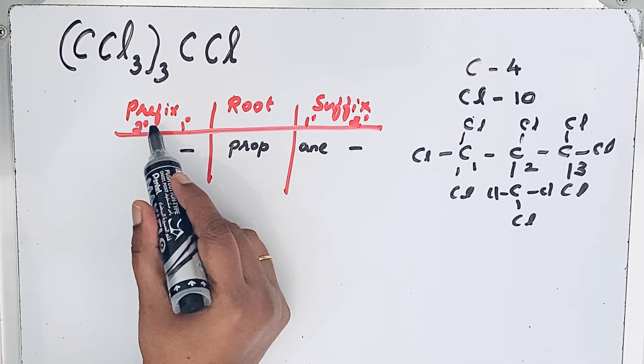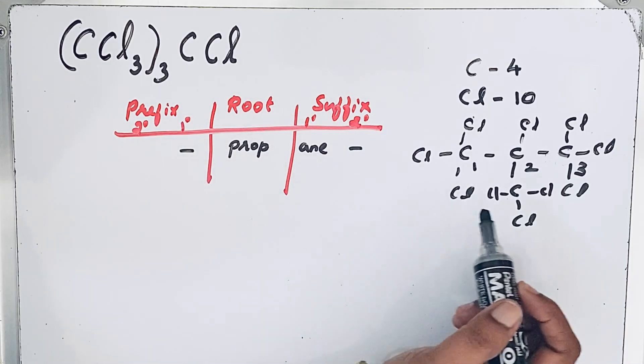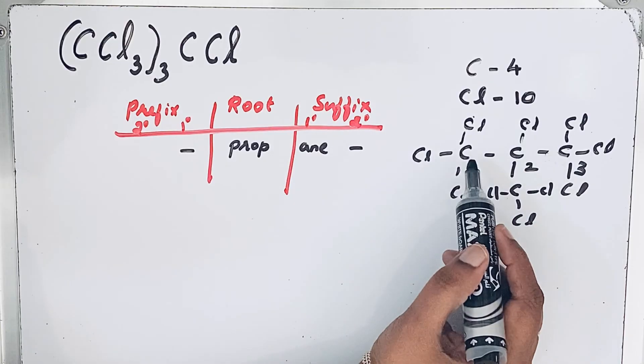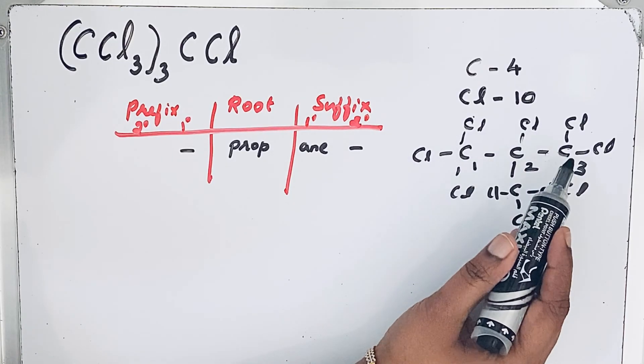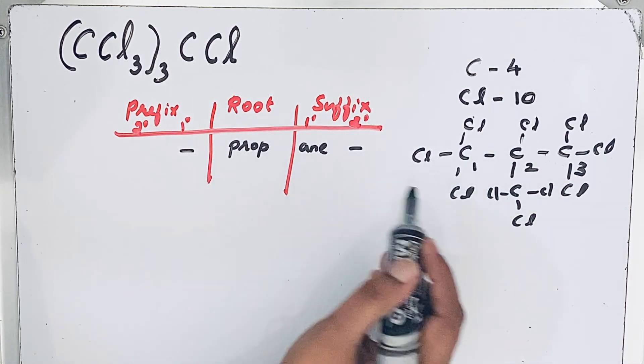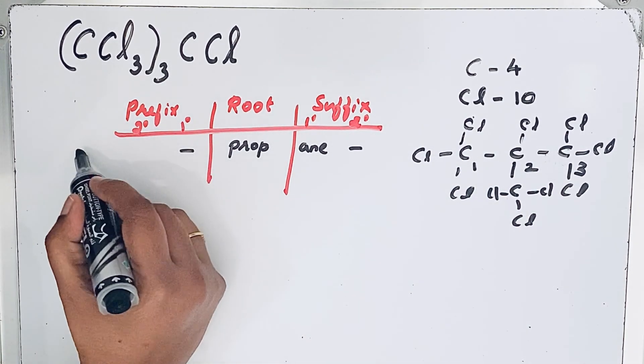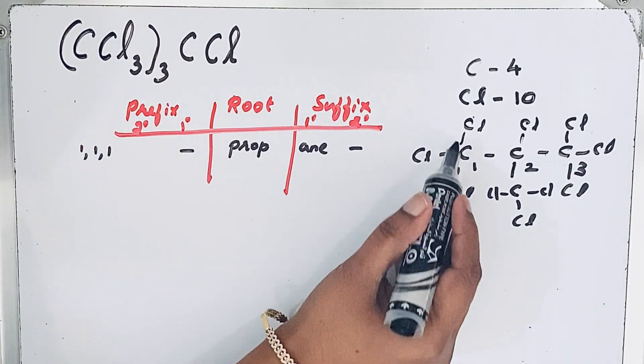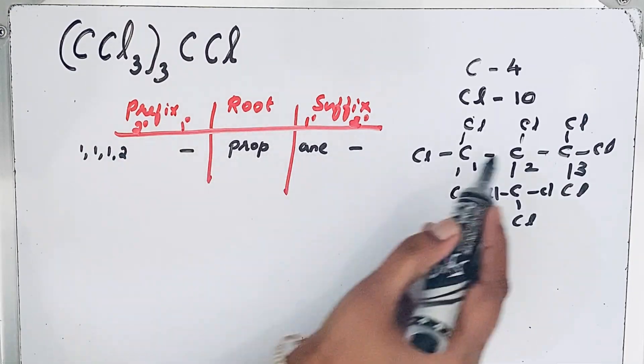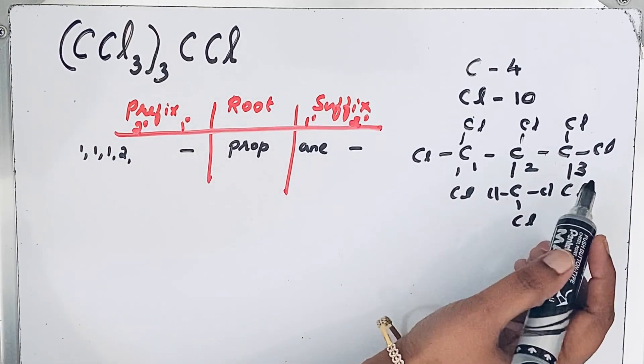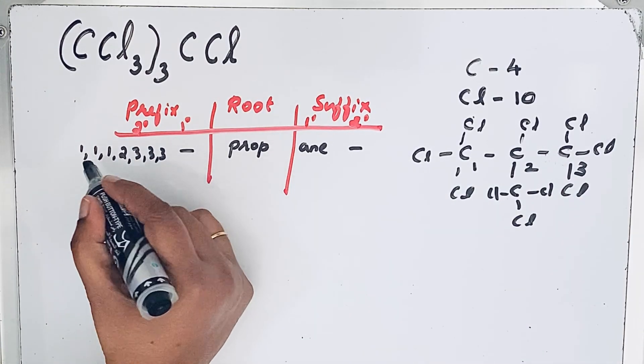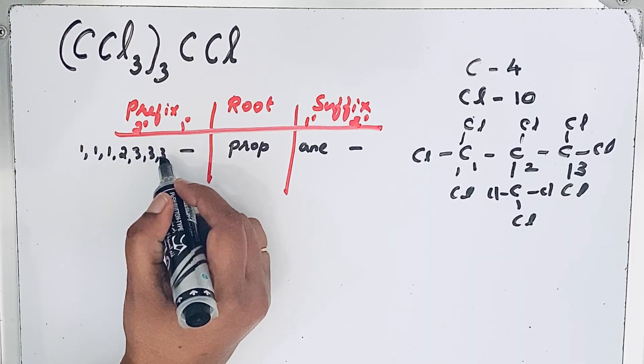For the secondary prefix, we have two possibilities: one is branched chain, then we have chlorine substituted in all the carbons. We can write how many chlorine substituted: 1, 1, 1, 1—three chlorine here, then in the second one also we have one chlorine, same way for the third carbon, three. So 3, 3, 3—how many? 1, 2, 3, 4, 5, 6, 7.